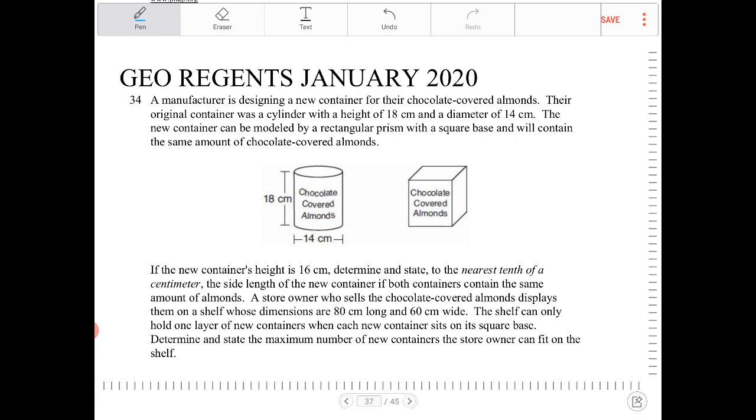so what we have to do here is we need to figure out the dimensions of the rectangular prism. It says here that the height of the new container is 16, and it's a rectangular prism with a square base.